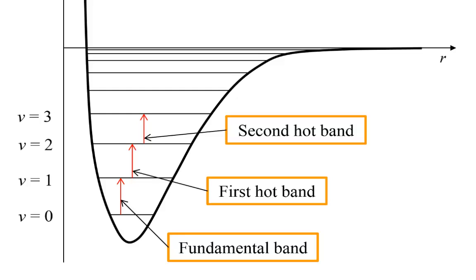The intensities of the hot bands are very much weaker than the intensity of the fundamental band. But the reason for this is that the population of V equals 1 and V equals 2 states, which are the initial states for the first and second hot bands respectively, are very much smaller than the population of the V equals 0 state, which is the initial state of the fundamental band. For something like HCl or carbon monoxide at room temperature, the intensities are absolutely minute so you generally don't see them. You'd have to be at much higher temperatures to see the hot bands, or you'd have to have a molecule where the frequency is much smaller, like in a heavier diatomic.